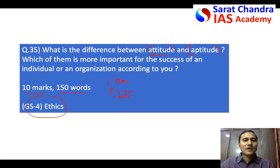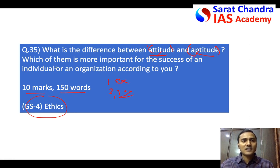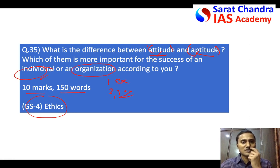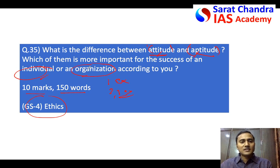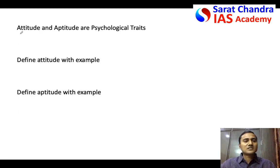The first part of the question is: what is the difference between attitude and aptitude? The second part is: which of these two is more important, either for a person or an organization? Try to write both — for a person, what is more important, and for an organization, what is more important. In the introduction, let us define what they are. You can start by saying that attitude and aptitude are both psychological traits of a person.